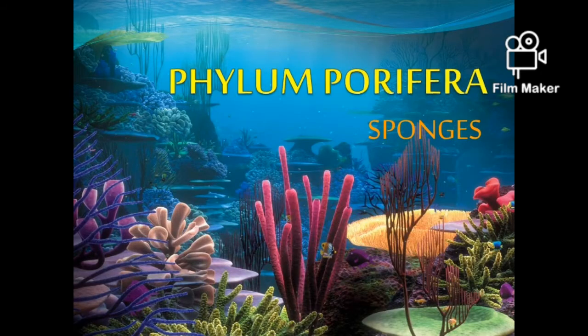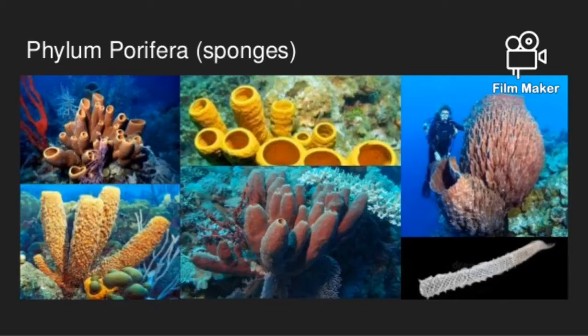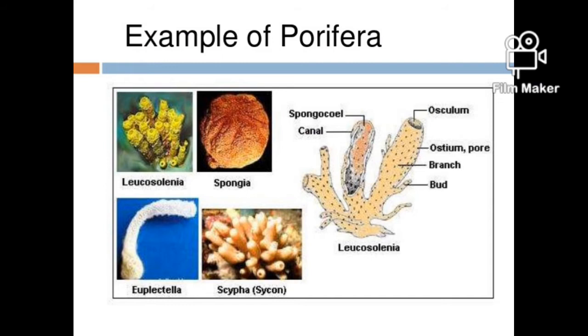The first phylum is Phylum Porifera. These are also called sponges. Here, 'pori' means holes and 'phyren' means bearers, so they are hole-bearers. Porifera are aquatic and non-motile — they can't move from one place to another. Some are also found in freshwater, like Spongilla. They are multicellular organisms and don't have tissues or organs. They are asymmetrical, and their endoskeleton is made up of calcium carbonate or silica, which gives their body shape.